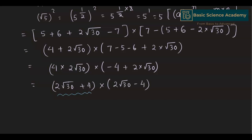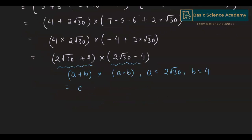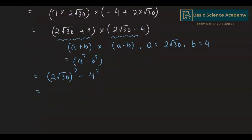This is again in the form (a+b)(a-b), where a equals 2√30 and b equals 4. Applying the identity gives a² - b², which is (2√30)² - 4². This equals 4 × 30 minus 16, which is 120 - 16.